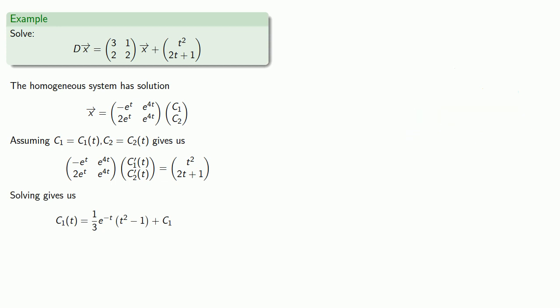Similarly, we can take our two equations, and if we multiply our top equation by 2 and add, we'll eliminate the C1t prime.